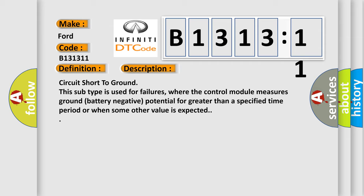Circuit short to ground. This subtype is used for failures where the control module measures ground battery negative potential for greater than a specified time period or when some other value is expected.